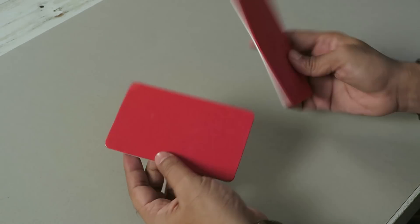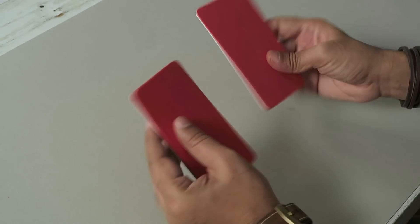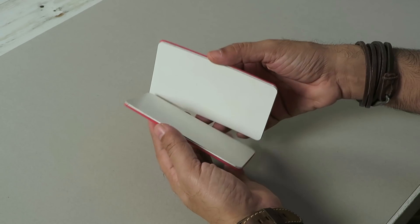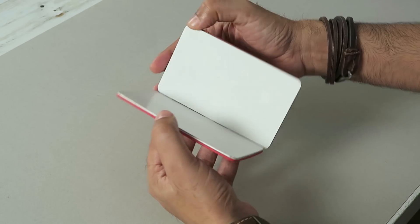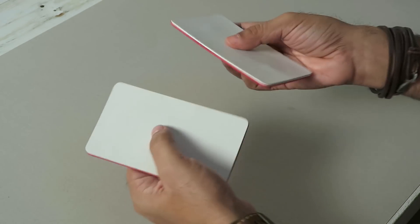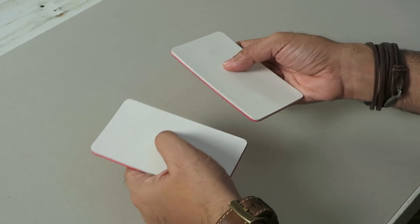And with that we are done with the covers. Look at that. Looks nice and clean and because of the magnets they stick to each other. But now we just have the covers, we don't have a diary. So let's make the diary now.